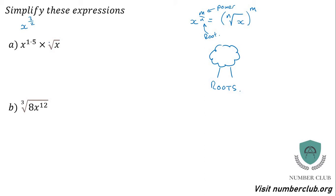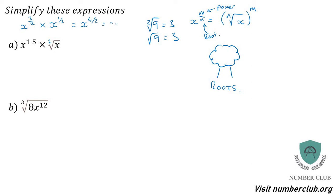Square roots miss the 2 — it doesn't really matter that it's not written there. The square root of 9 is 3, and sometimes we just say root 9 is 3; these are exactly the same thing. So x to the power of 1 half is a square root of x. Anything to the power of a half is a square root. When you multiply x to the power of 3 over 2 by x to the power of 1 over 2, you get x to the power of 4 over 2, which is x squared.